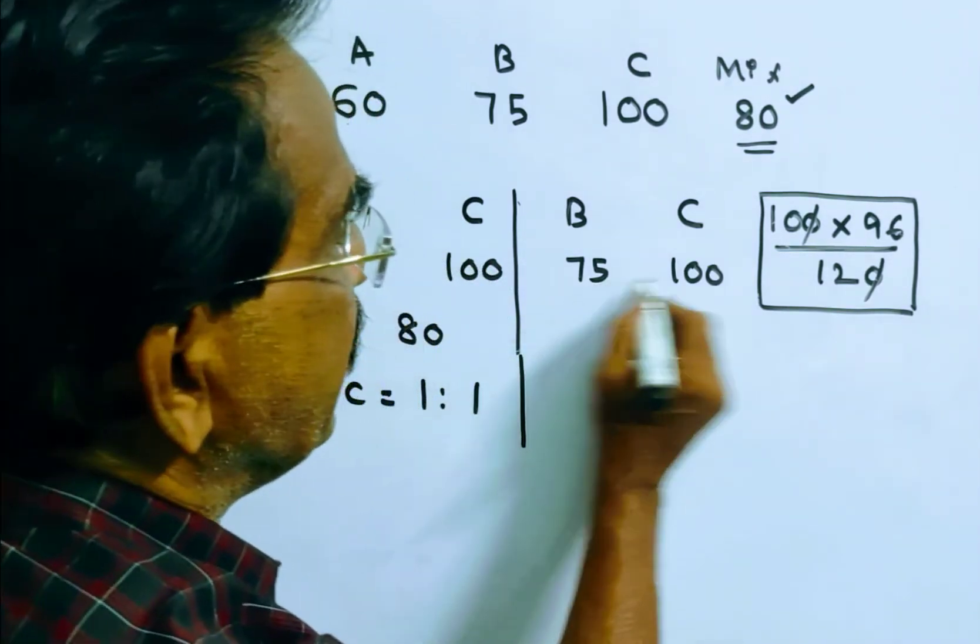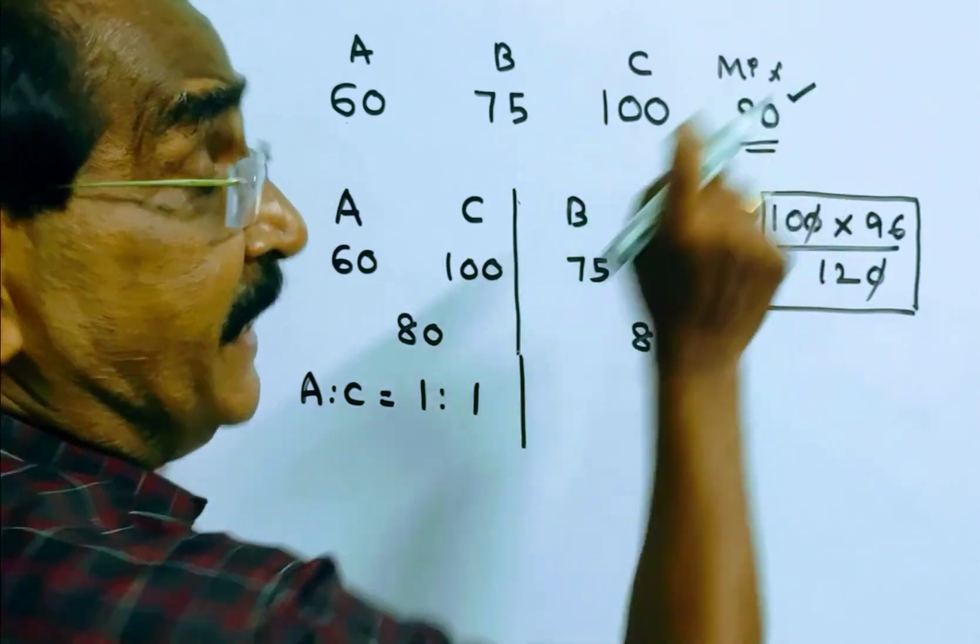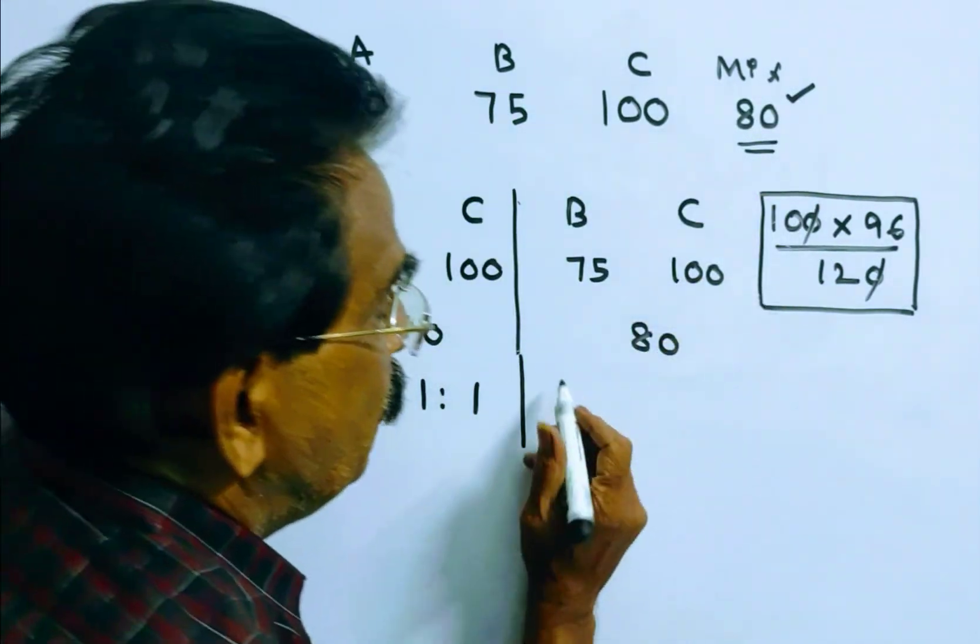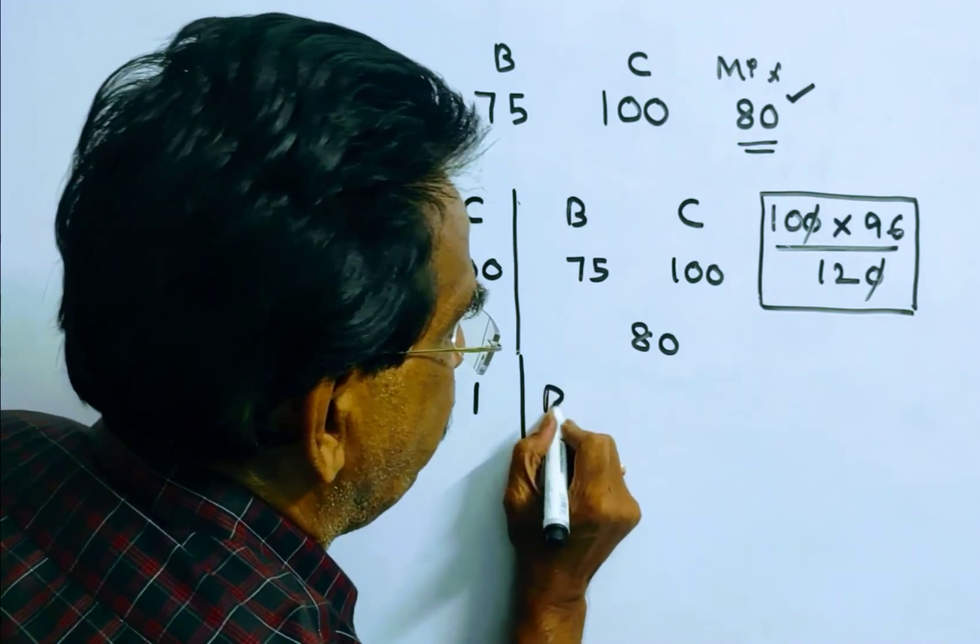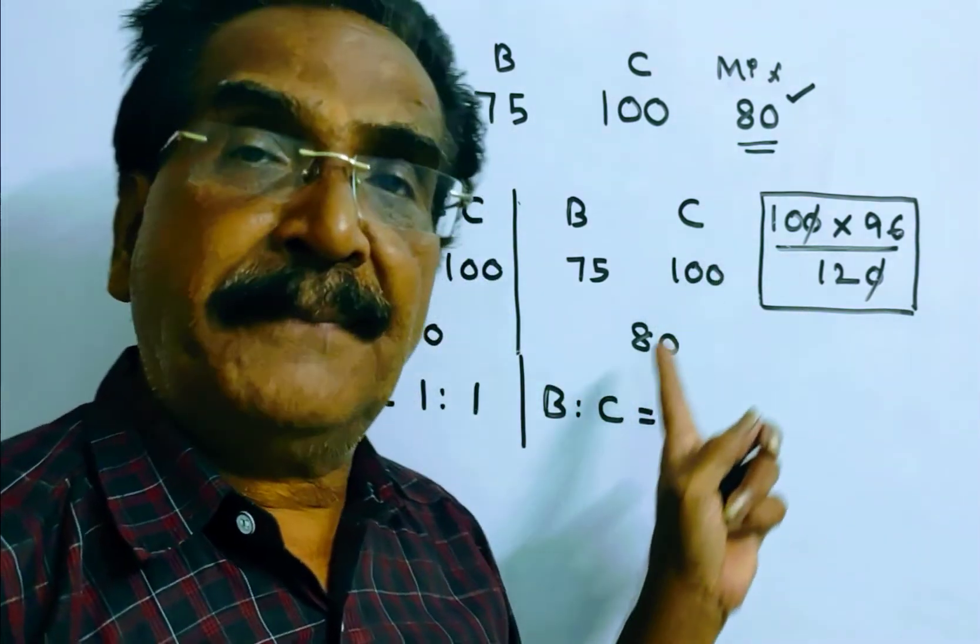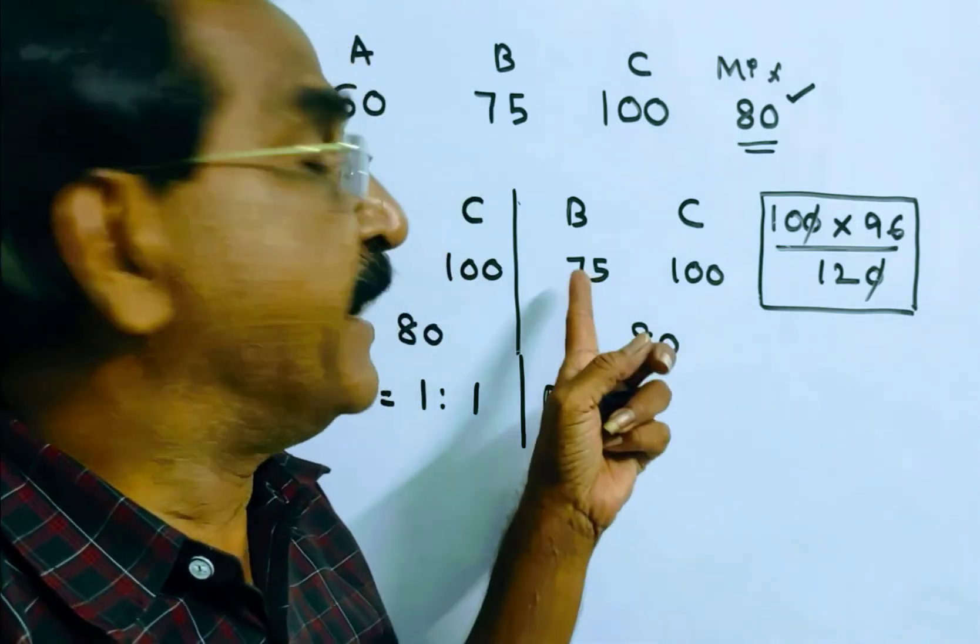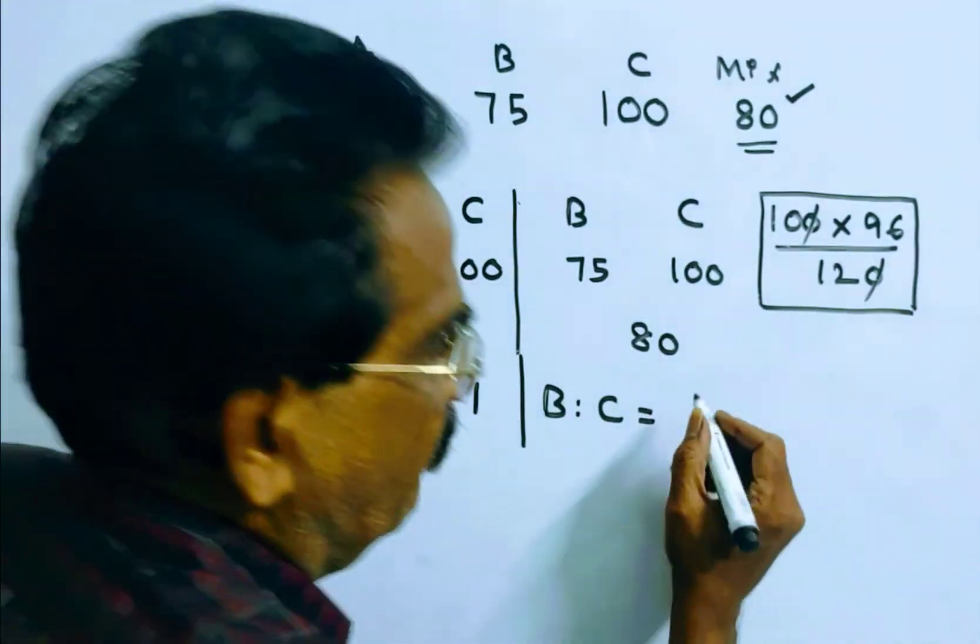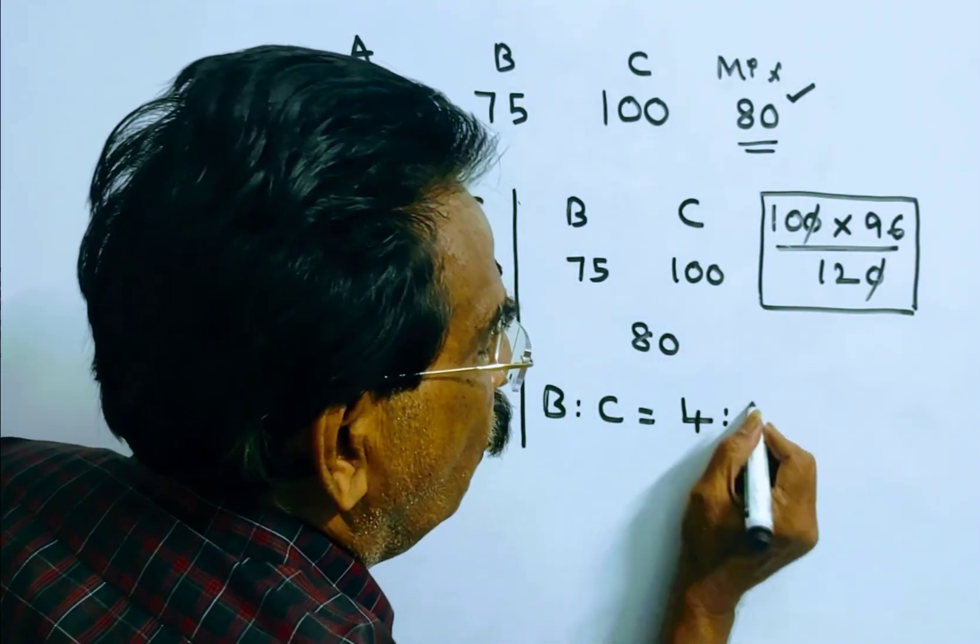Similarly, this 80 lies between B and C. So here we can find the ratio of B and C by applying rule of Alligation. 100 minus 80 is 20. 80 minus 75 is 5. 20 is to 5 simplifies to 4 is to 1.